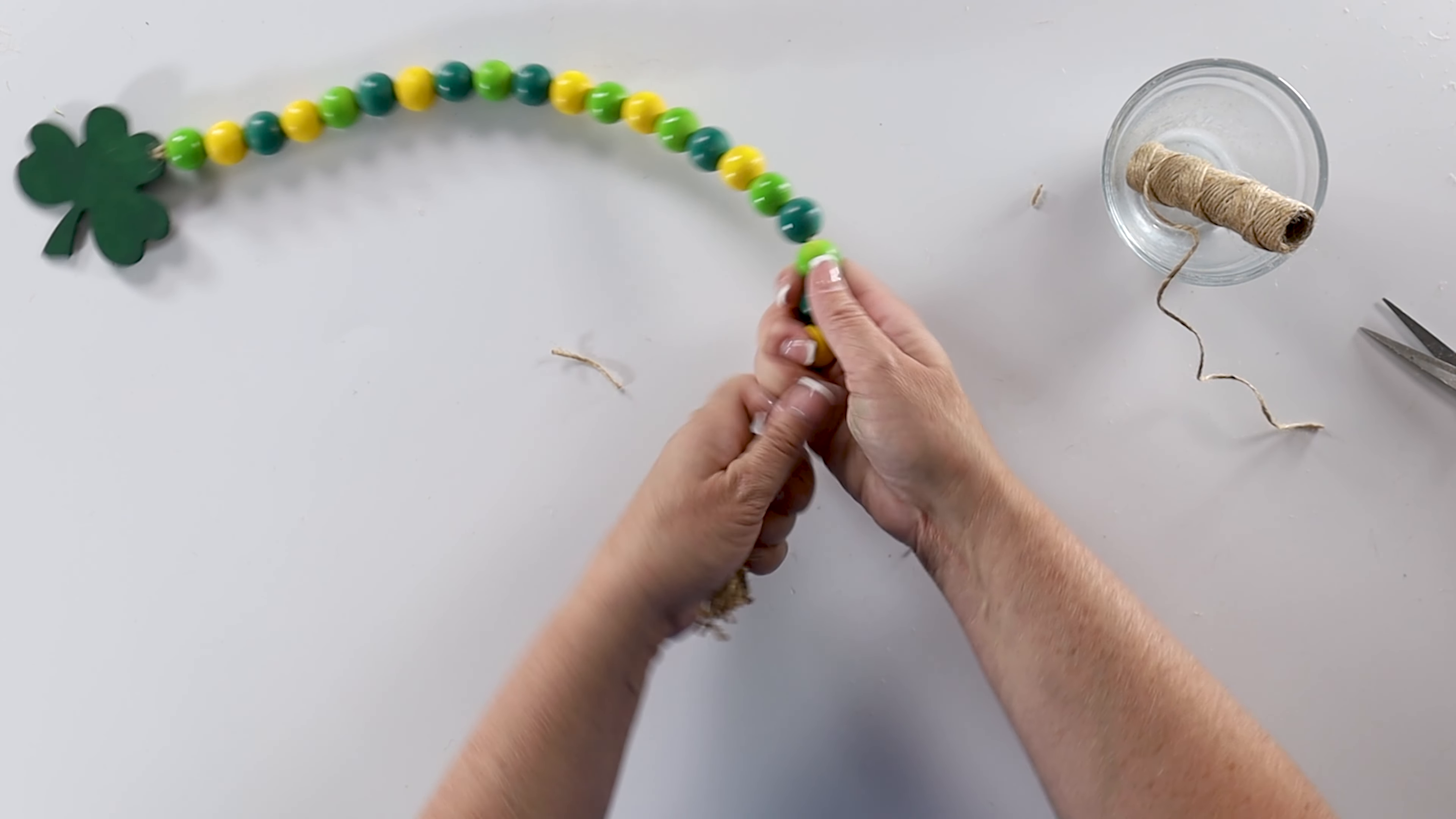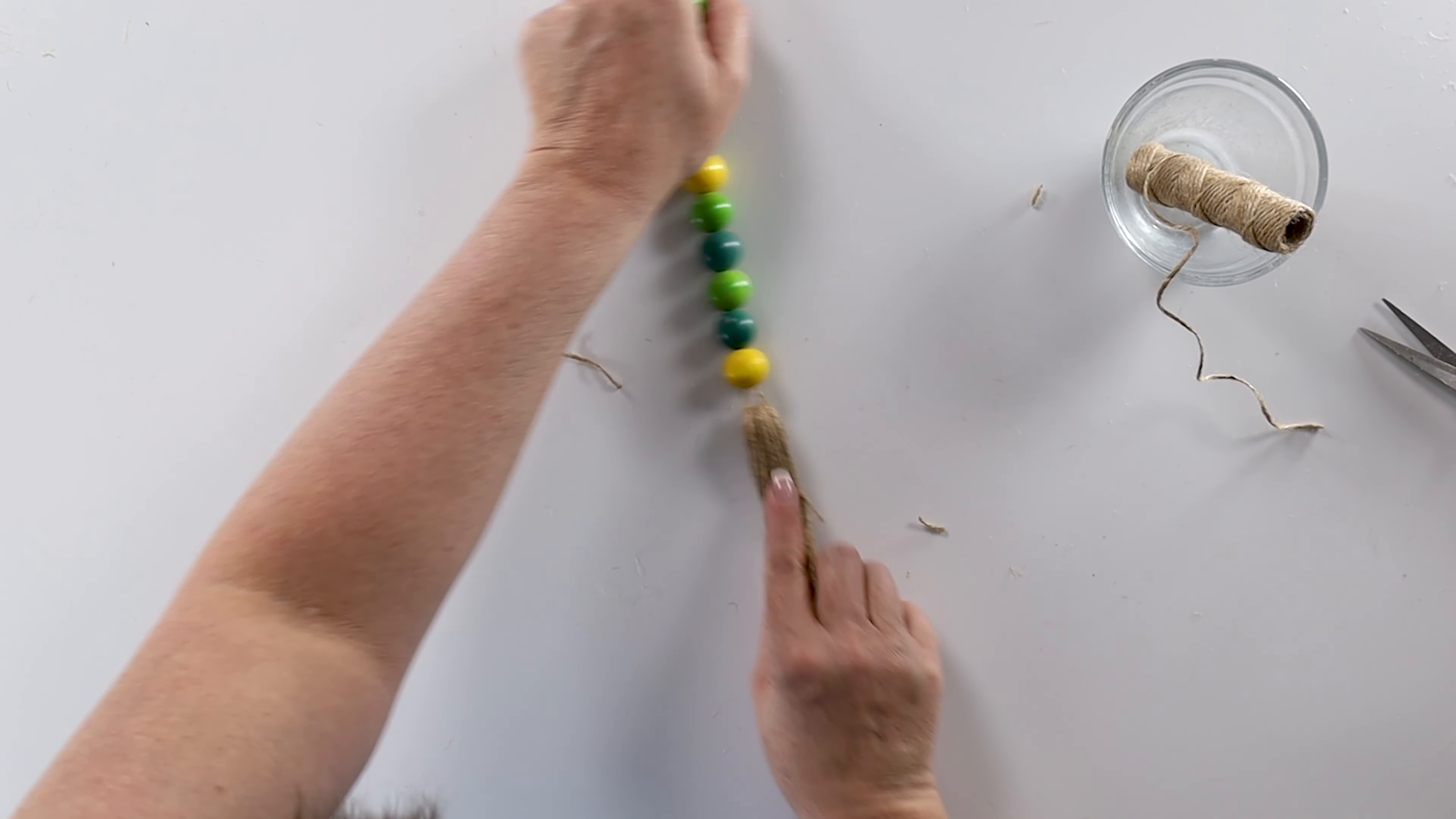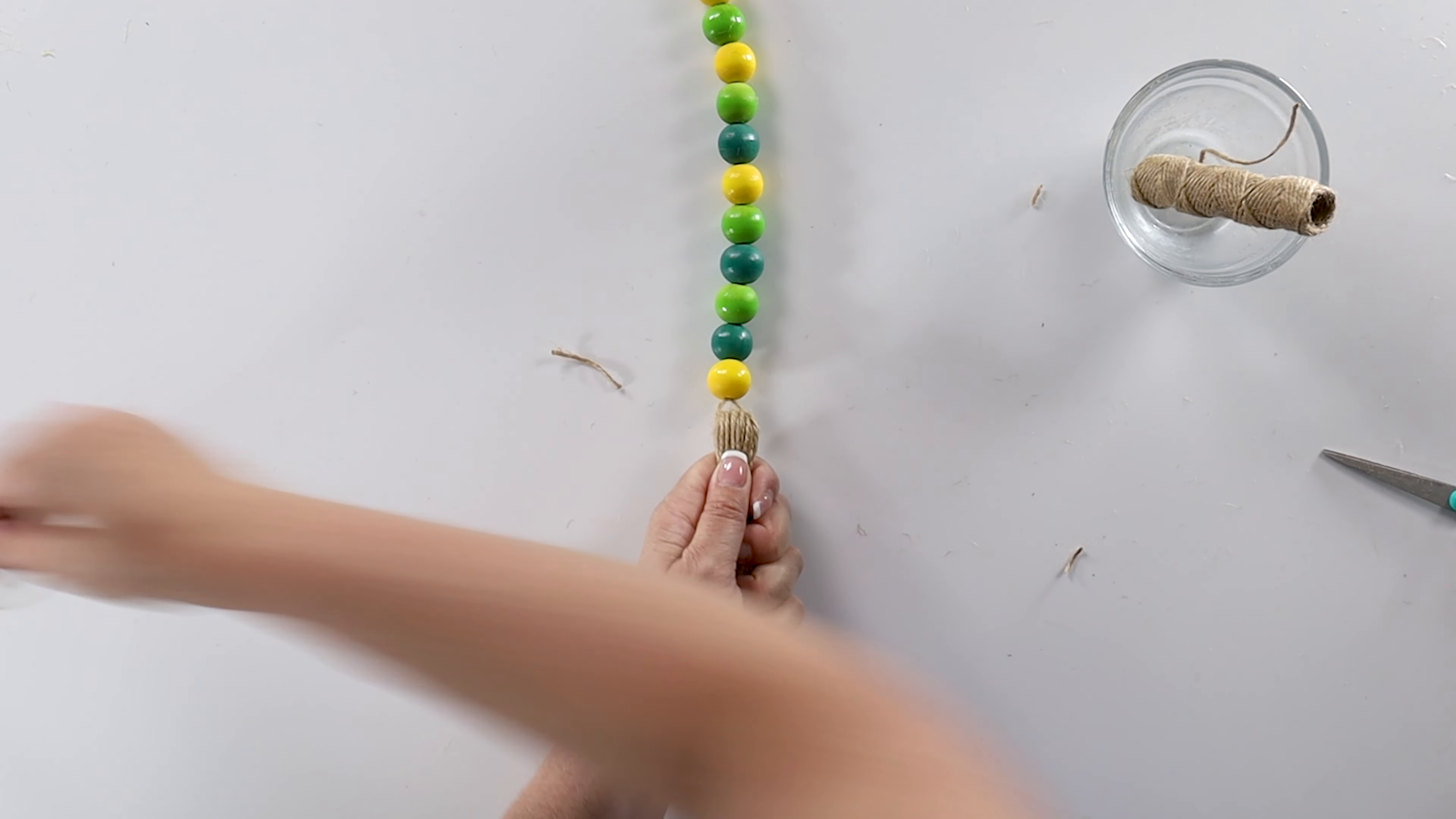Now the instructions for the loom is to cut those last. But I really want to make sure that my bead is at the top. And when cutting it last, I just couldn't make that happen. Okay, so I'm going to pull my beads to the top. And then I'm going to cut another length of twine. That's maybe 12 inches or so.